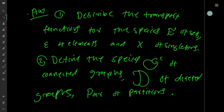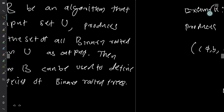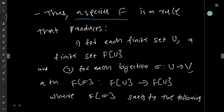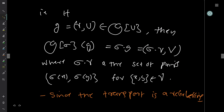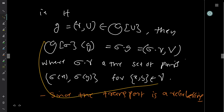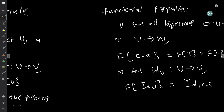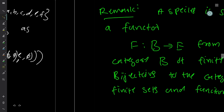Some questions: describe the transport of functions for the species E of sets, species ε of elements, and species X of singletons. You have to see what happens whenever a bijection is given and what the corresponding transport will be — similar to how we did it for graphs. Second question: define the species GC of connected graphs, species T of directed graphs, and species Par of partitions.